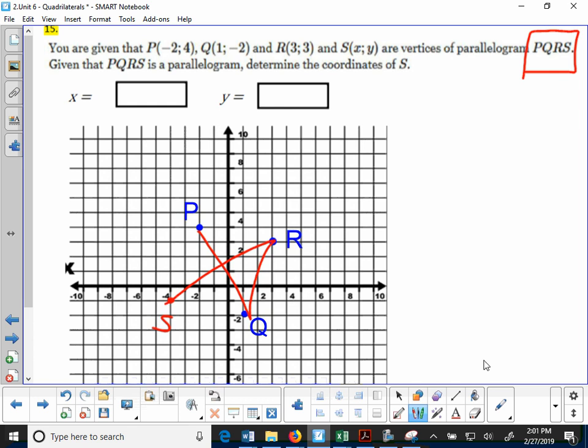That is crazy. So what we have to do instead is we have to put S in between P and R somewhere so that this parallelogram is going to look like this. P, Q, R, and then S is going to be somewhere up in here like we just said.